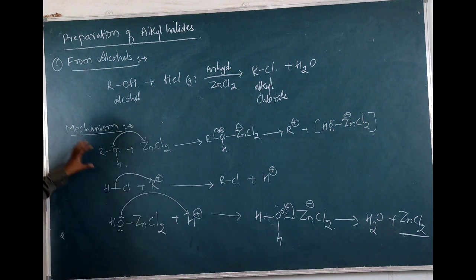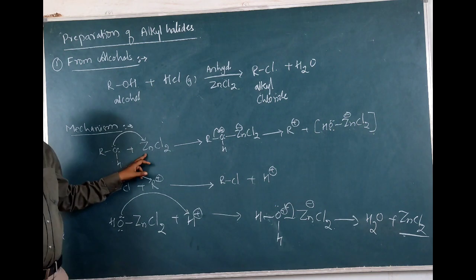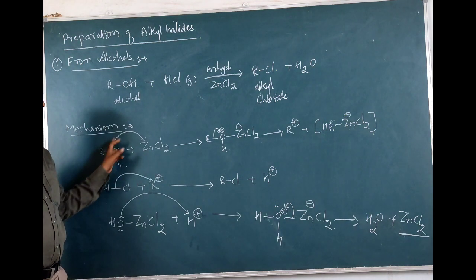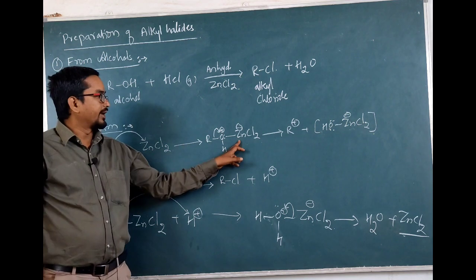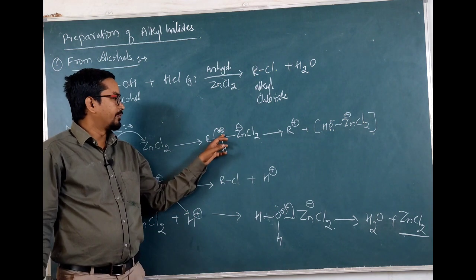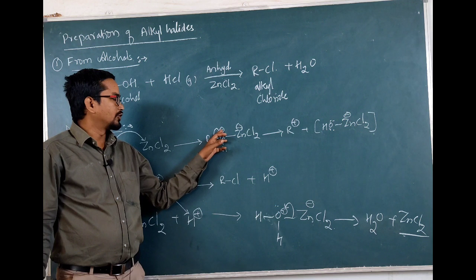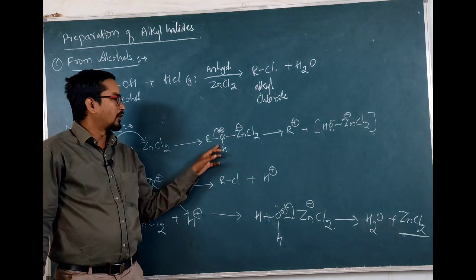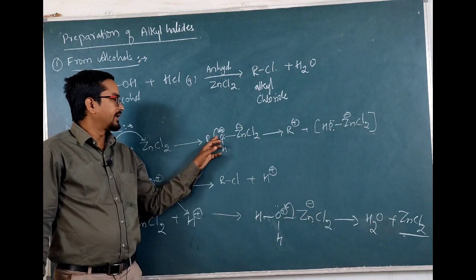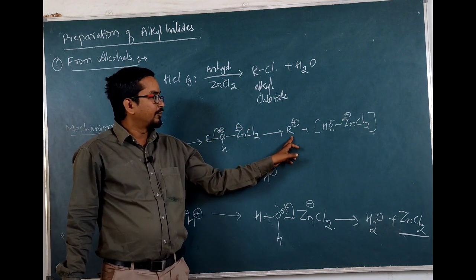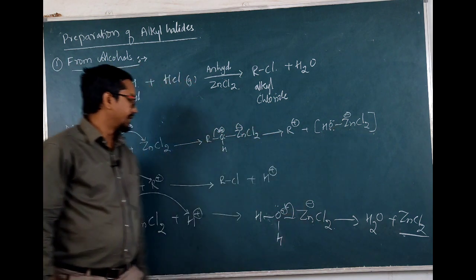You can see: alcohols on reacting with hydrogen chloride in the presence of anhydrous ZnCl2 will lead to the formation of alkyl chloride and water as a product. If you look at the mechanism: alcohol reacts with ZnCl2, which is a Lewis acid — it gains the electron pair and acquires a negative charge — and oxygen forms a positive charge over it.